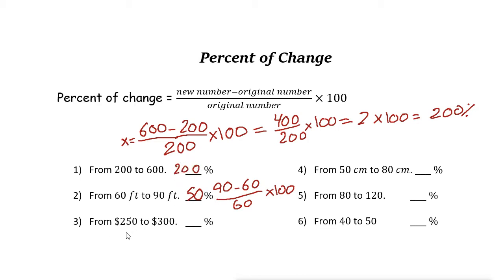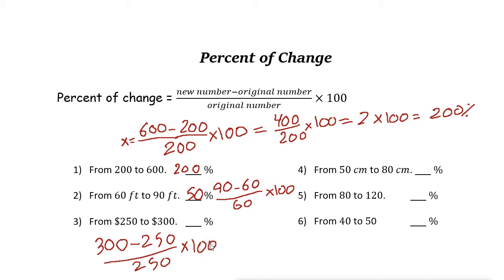Next one: 250 to 300. The new number is 300, minus 250, divided by 250 the original number, times 100. 300 minus 250 is 50 over 250. 50 over 250 is one fifth. One fifth times 100 is 20. So the percent of change from 250 to 300 is 20 percent.